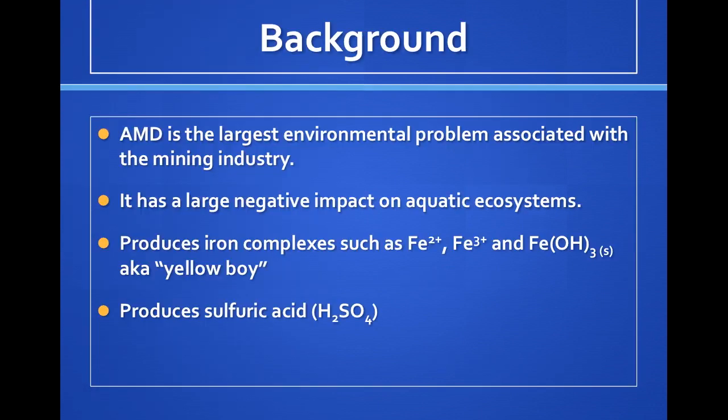Mine drainage is one of the biggest environmental problems associated with the mining industry. In Southeast Ohio, mine drainage is the single largest impairment of surface waters. Acid mine drainage produces iron complexes which precipitate from the water, coating the stream bottom with yellow boy, or orange rust. In addition to increased iron, acid mine drainage is also very acidic, as sulfuric acid is generated in the abandoned mines.